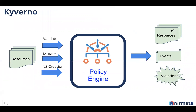So if you see on the left, you have the resources. On a resource, you can either validate, mutate, or use generate — for example, on a namespace creation I want to create a config map or a default network policy. What we do is leverage the admission control, the mutating and validating webhooks, which intercept the request. Based on the policies we have, we evaluate it. If the resource satisfies the policy, we continue creating it. If not, we can block it or run it in audit mode. All this information — if blocked or created — is visible as an event or as a new CRD called violations.